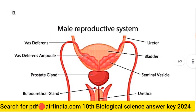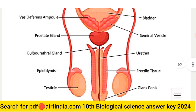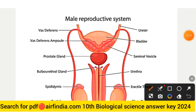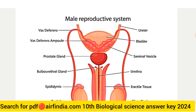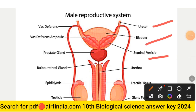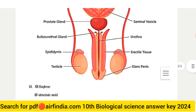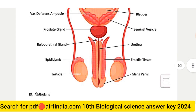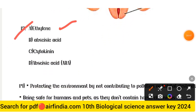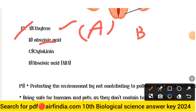Question 12 answer: Male reproductive system. Here you can see a labeled diagram of the male reproductive system — you have to draw this in your notebooks and practice. The diagram includes the ureter, bladder, seminal vesicle, urethra, prostate gland, and vas deferens.